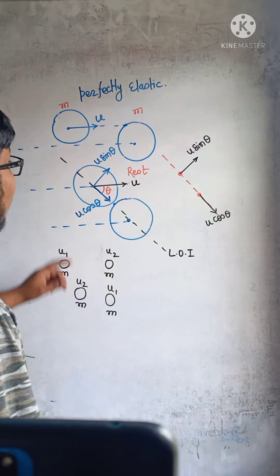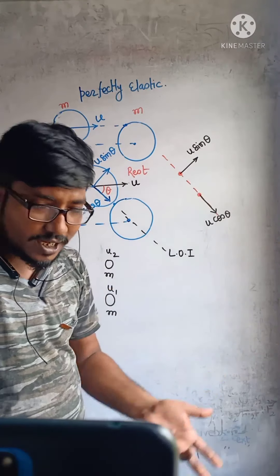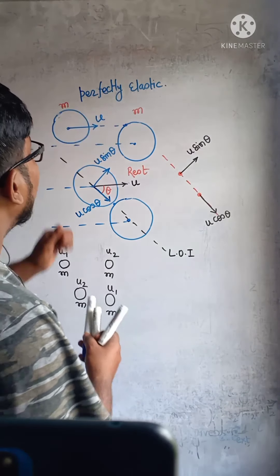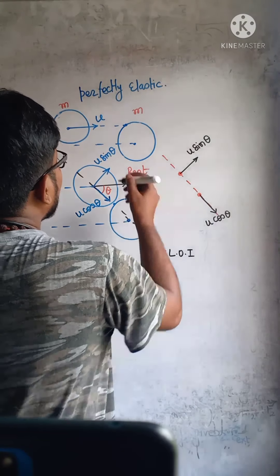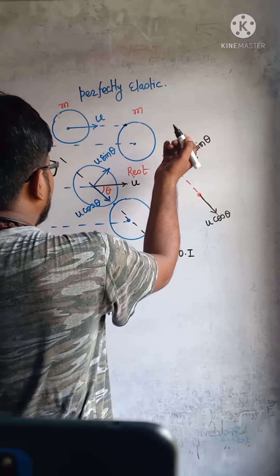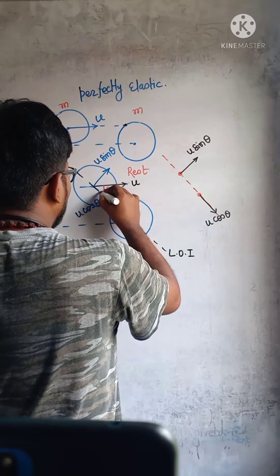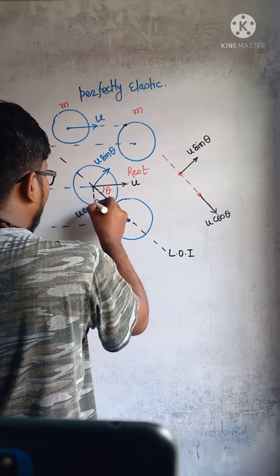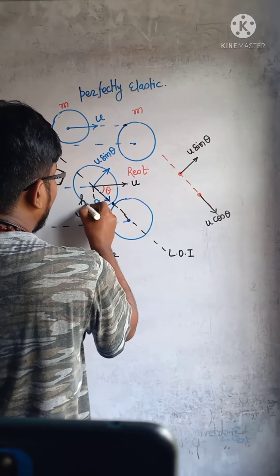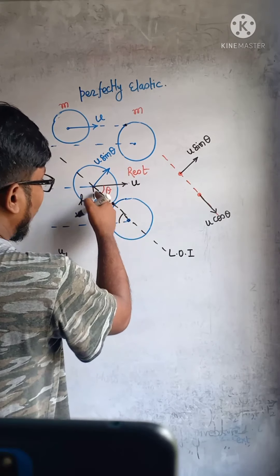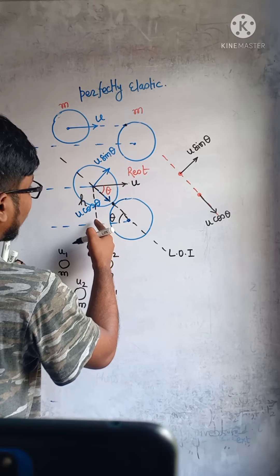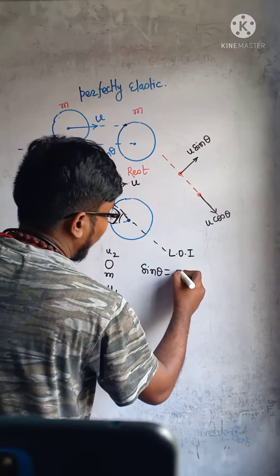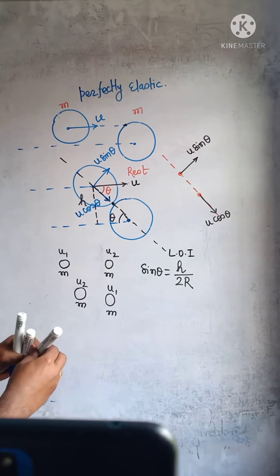The value of theta depends on where the ball hits. If we want to find theta, we need to know the point of impact. For example, if both balls have radius R, and the perpendicular separation between the incoming ball's path and the center of the stationary ball is H, then cos theta and sin theta can be determined from this geometry.